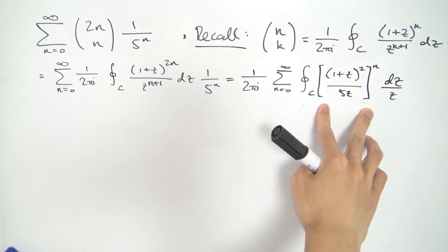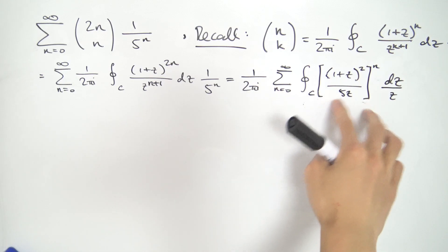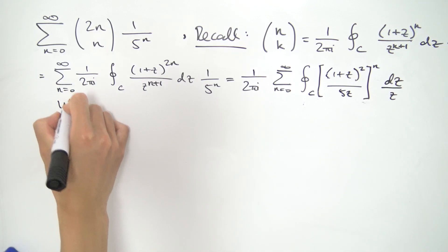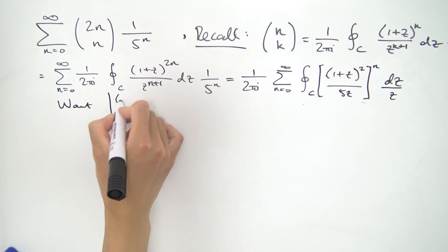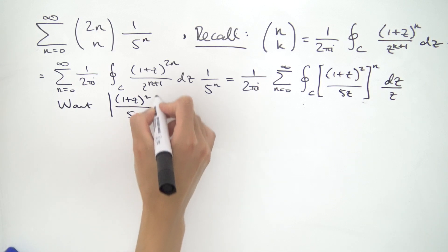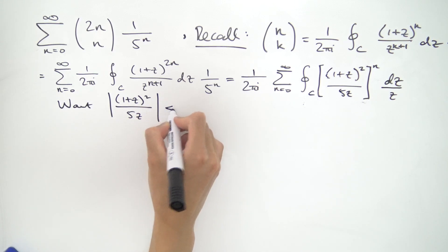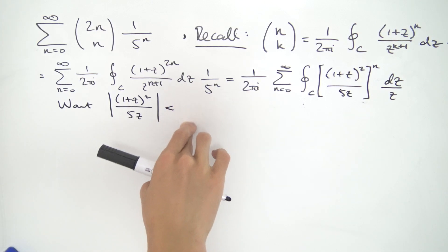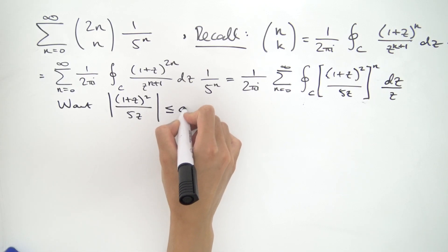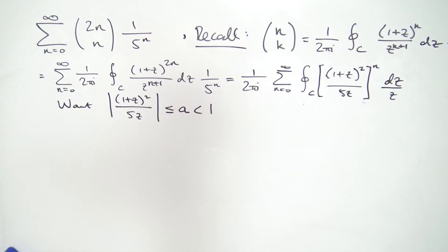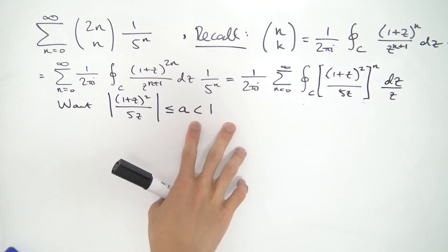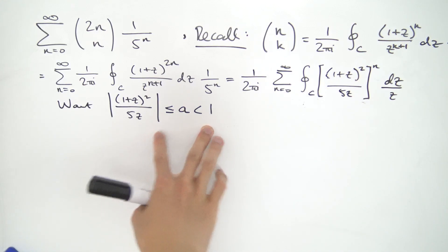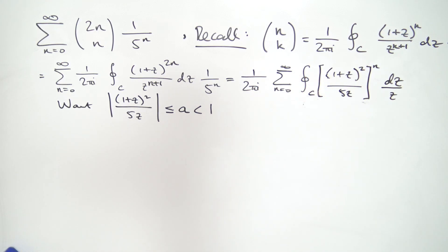We can do this interchange if we're careful about where we are in the radius of convergence. For the geometric series, we want the inside of this nth power to have absolute value less than 1. More precisely, we want the absolute value of 1 plus z squared over 5z to be less than some number A which is itself less than 1 for uniform convergence. If we choose our contour C such that all the z's on it satisfy this relation, then everything is uniformly convergent and we can switch the summation and contour integration.